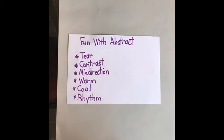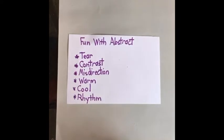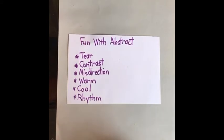Some key words we want to talk about: tear — because we're not using scissors today, and that should be fun in itself — contrast, misdirection, warm, cool, and rhythm. Tear obviously means we're going to use our fingers. Contrast is the difference between, for example, light and dark.